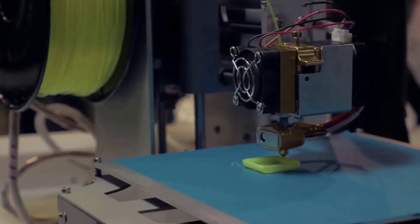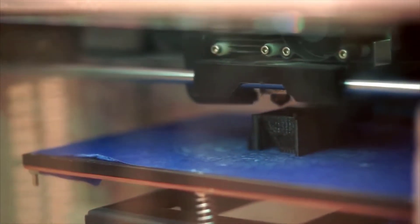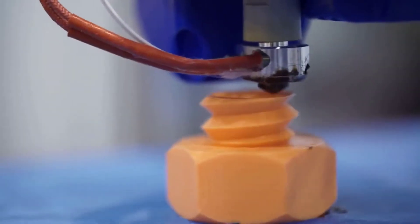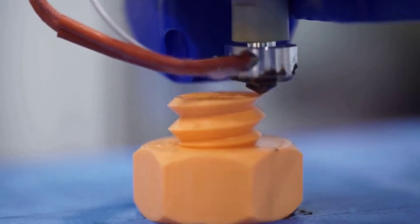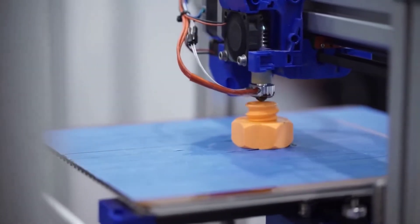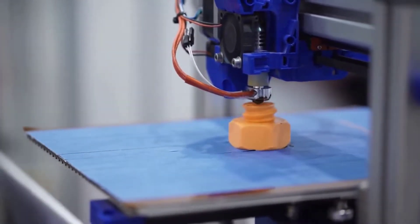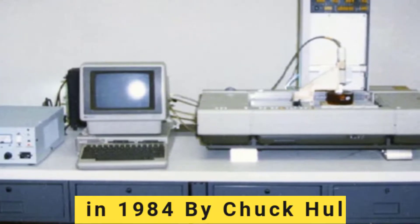3D printing is the opposite of subtractive manufacturing, which is cutting out or hollowing out a piece of material to create an object. 3D printing enables you to produce complex, functional shapes using less material than traditional manufacturing methods. 3D printing is a relatively new technology and it is constantly evolving. The first 3D printer was invented in 1984 by Chuck Hull.